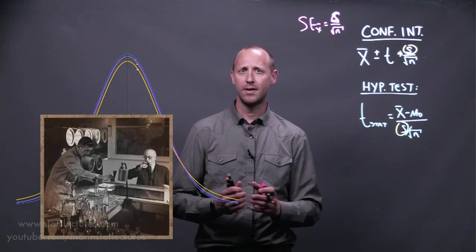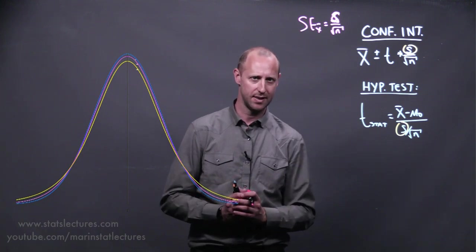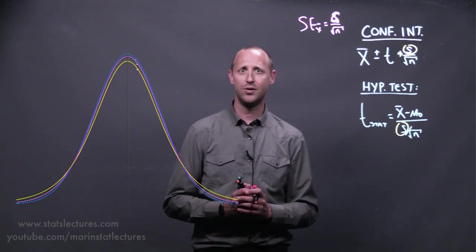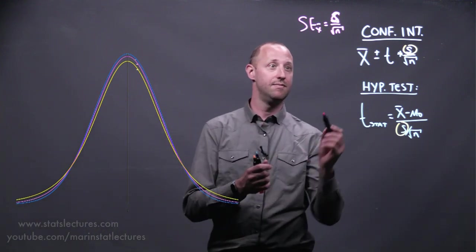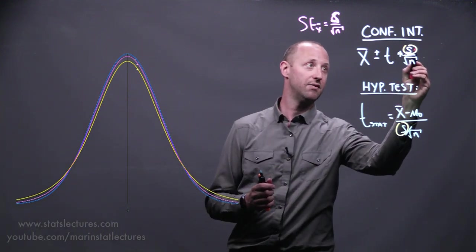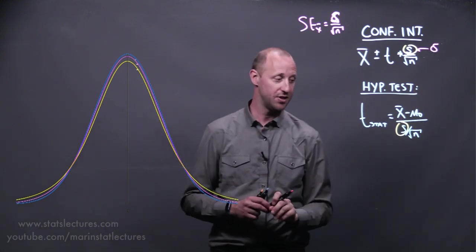and he noticed that his calculations using the normal distribution were off and underestimating things. He realized this was due to small sample sizes and the sample standard deviation not being a good estimate of the true population standard deviation.